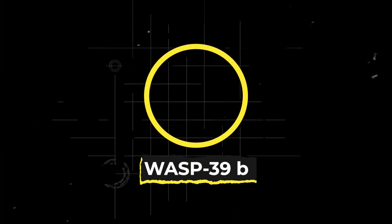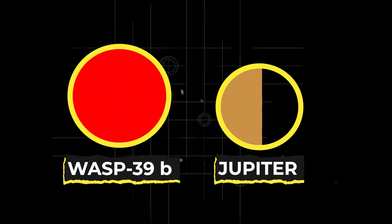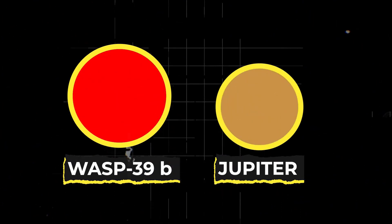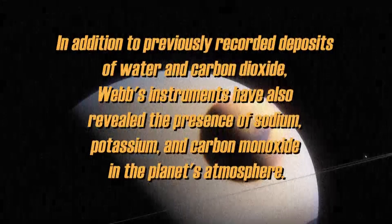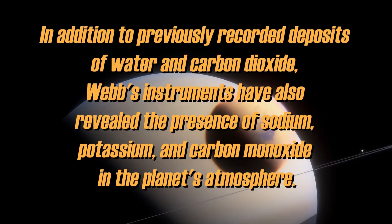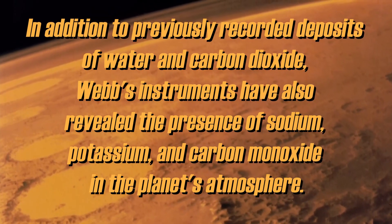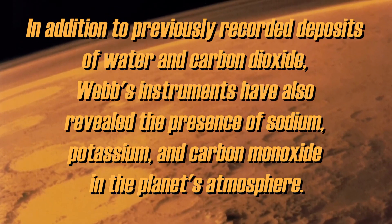Since WASP-39b exceeds mighty Jupiter in size by a factor of 1.3, analysis of its gaseous envelope has been especially revealing. In addition to previously recorded deposits of water and carbon dioxide, Webb's instruments have also revealed the presence of sodium, potassium, and carbon monoxide in the planet's atmosphere.